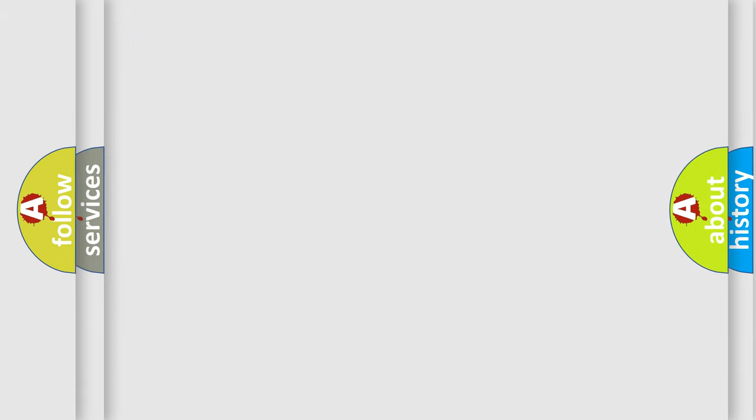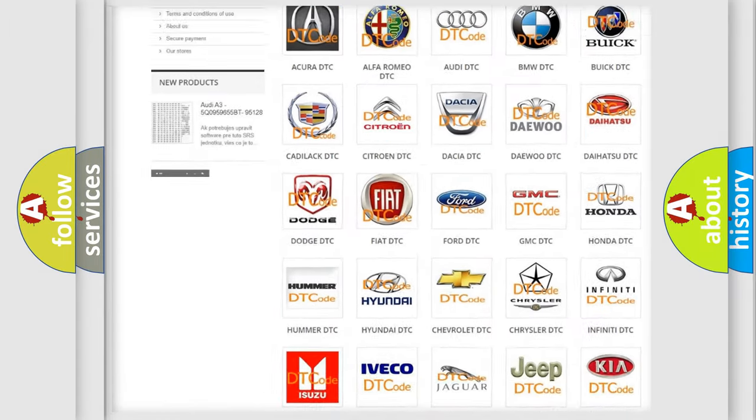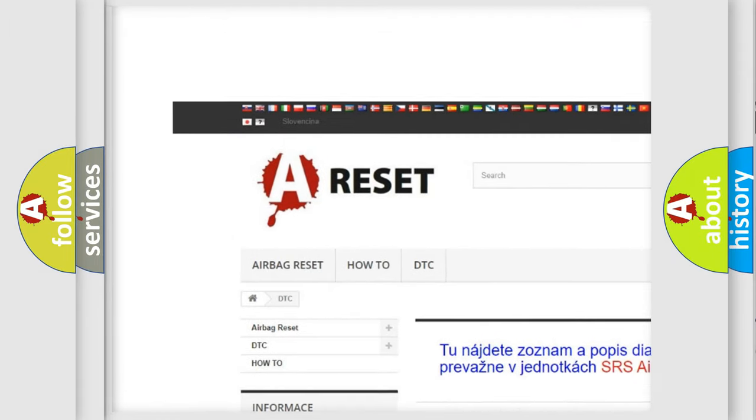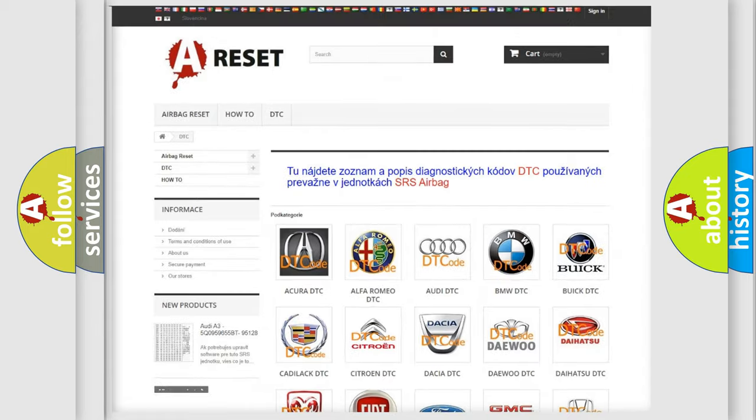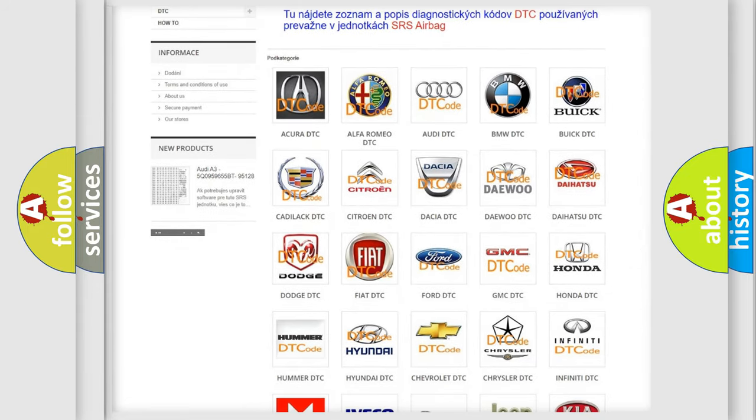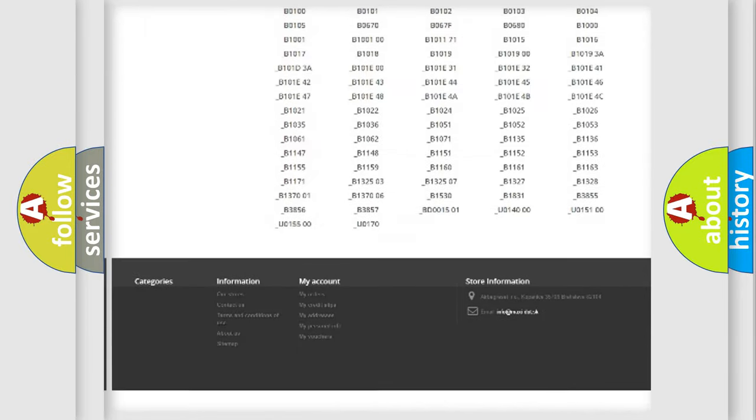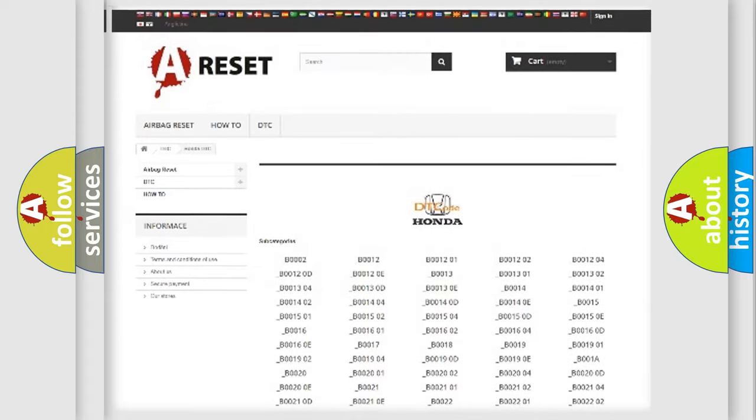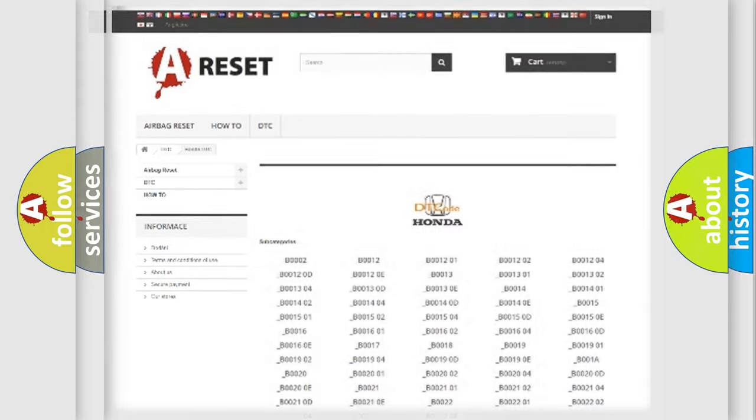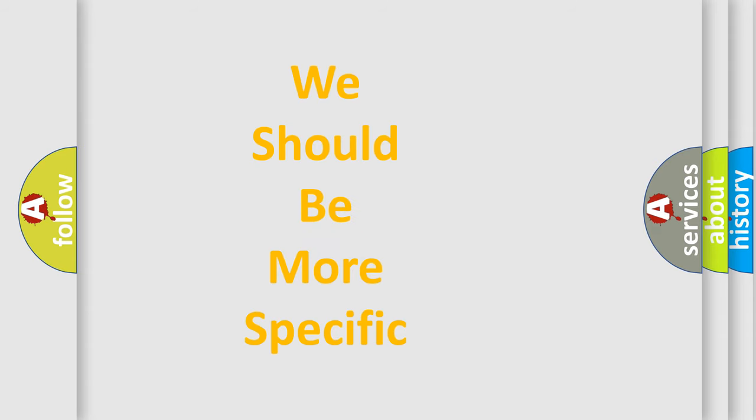Our website airbagreset.sk produces useful videos for you. You do not have to go through the OBD2 protocol anymore to know how to troubleshoot any car breakdown. You will find all the diagnostic codes that can be diagnosed in Honda vehicles, also many other useful things. The following demonstration will help you look into the world of software for car control units.